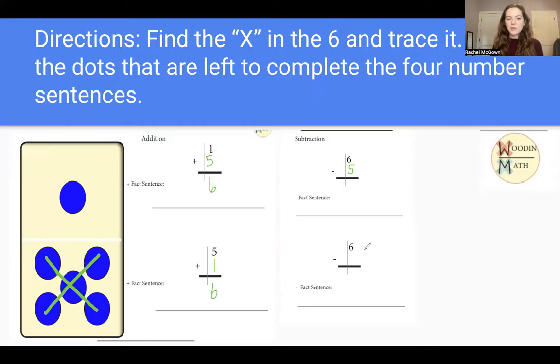how many did I have left over? That's right, one dot. So six minus five equals one. And if I take away that one dot, I'm left with my X or my five left over.